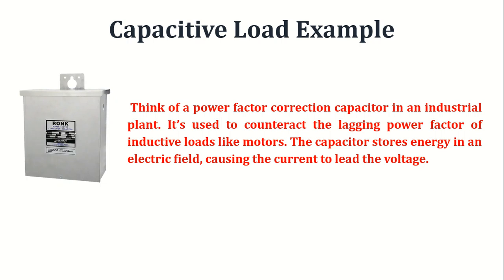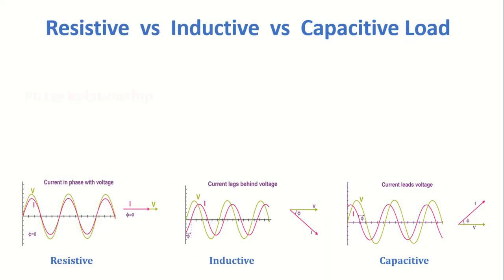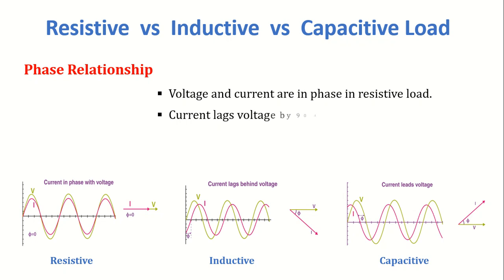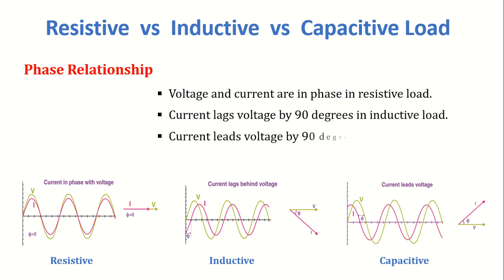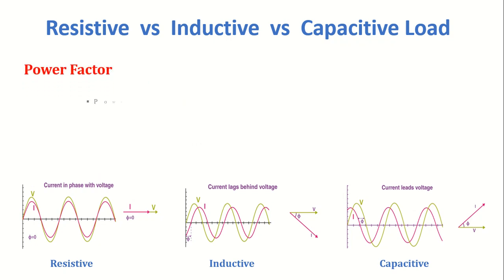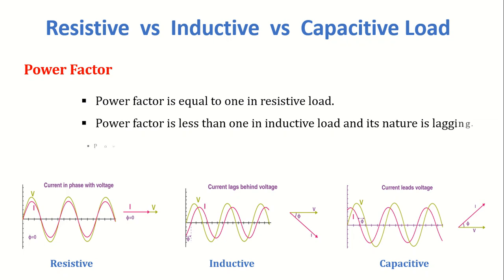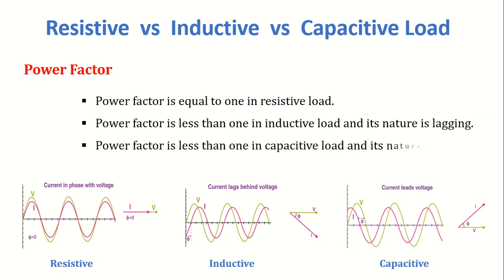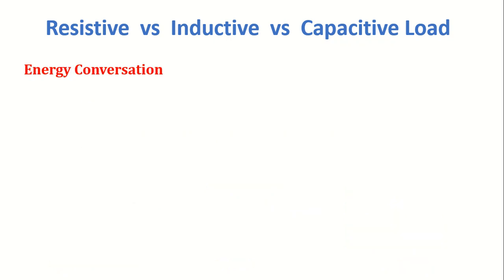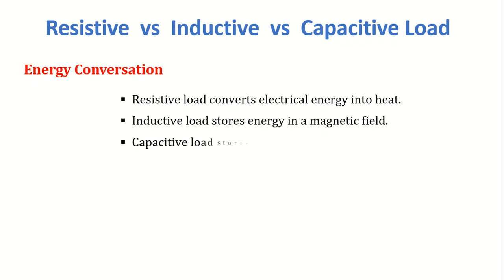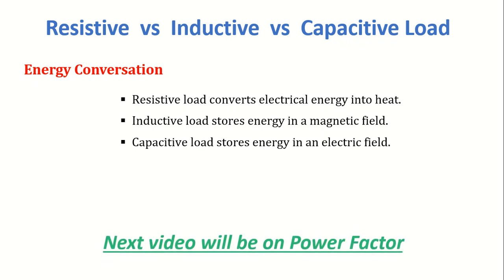Let's compare these three types in terms of three main aspects. When it comes to phase relationship: voltage and current are in phase in a resistive load; current lags voltage by 90 degrees in an inductive load; and current leads voltage by 90 degrees in a capacitive load. When it comes to power factor: it equals 1 in a resistive load; it is less than 1 and lagging in an inductive load; and less than 1 and leading in a capacitive load. For energy conversion: resistive loads convert electrical energy into heat; inductive loads store energy in a magnetic field; and capacitive loads store energy in an electric field.